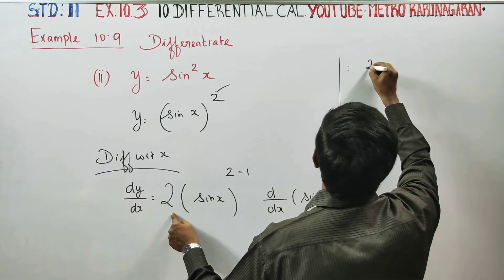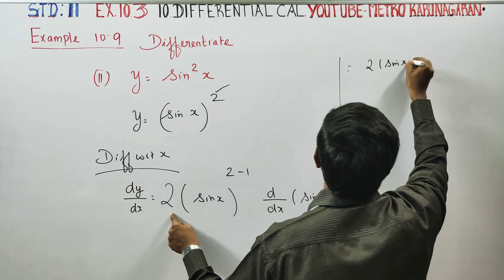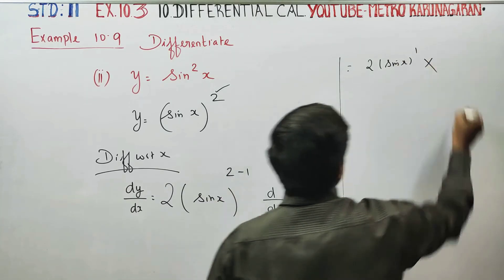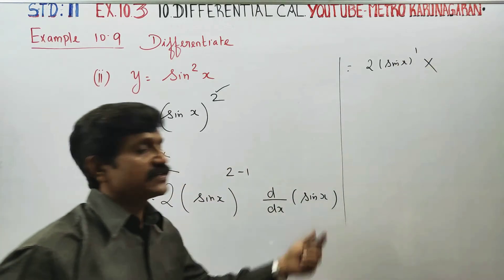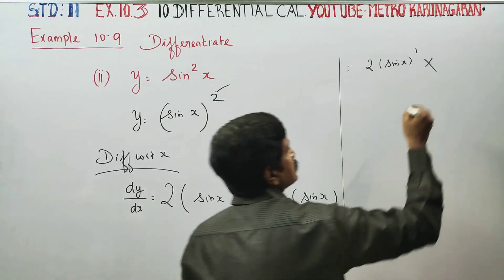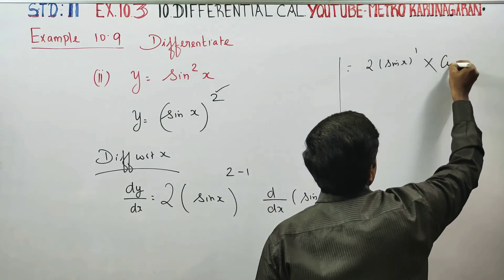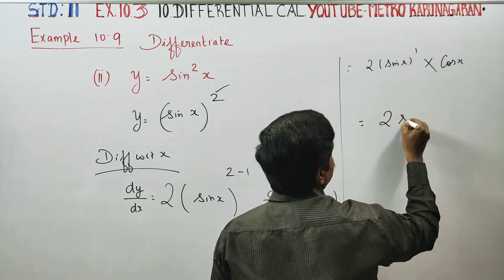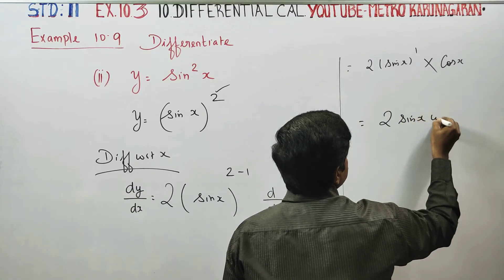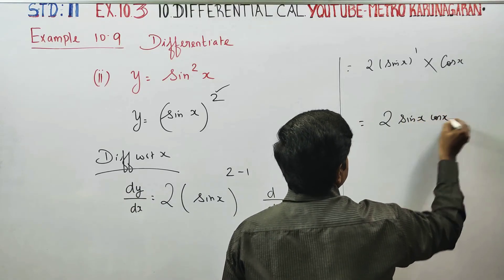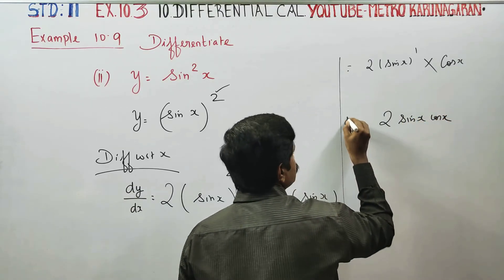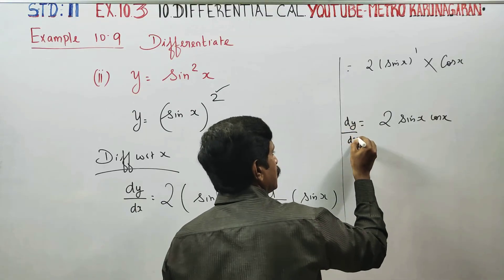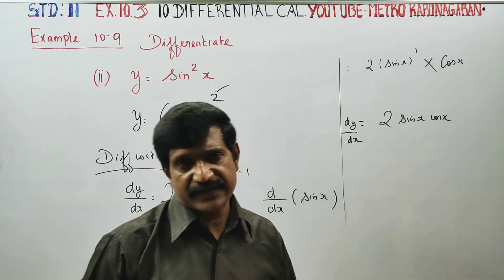2 times sin x. Sin x differentiate gives cos x. Therefore your answer will be 2 times sin x cos x. Then dy by dx is equal to 2 times sin x cos x.